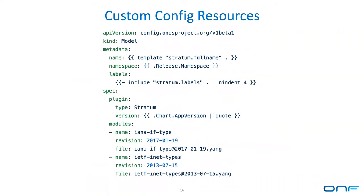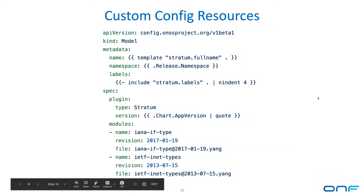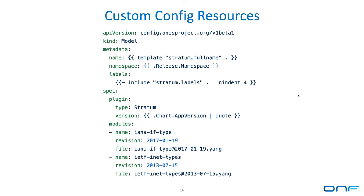There's also a model resource. This is an example of a model from the stratum Helm chart — we have a bunch of Helm charts defining these models. We're moving all of the Yang models and model plugins over into Helm charts now, and it's already been done. The components include the plugin name, the plugin version, and a list of modules to compile.